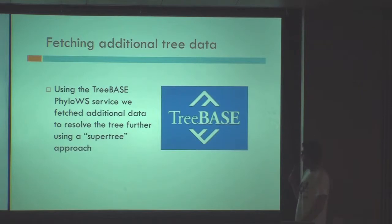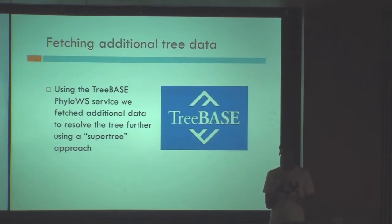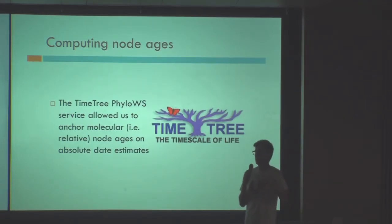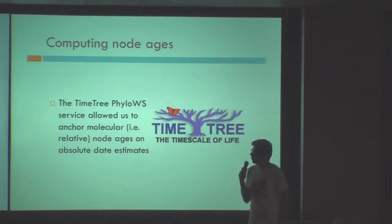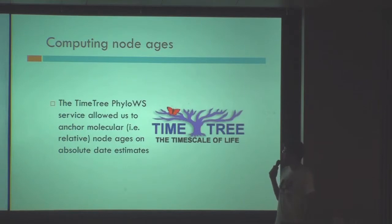At this point we had a very nicely resolved topology of nearly all the primates — about 220 species, give or take, maybe 250 depending on who you ask. But we didn't know when those different species branched off from each other. We had the tree shape, but not when the splits happened. We had some molecular data already, so we could estimate relative branch lengths, but not absolute ones.